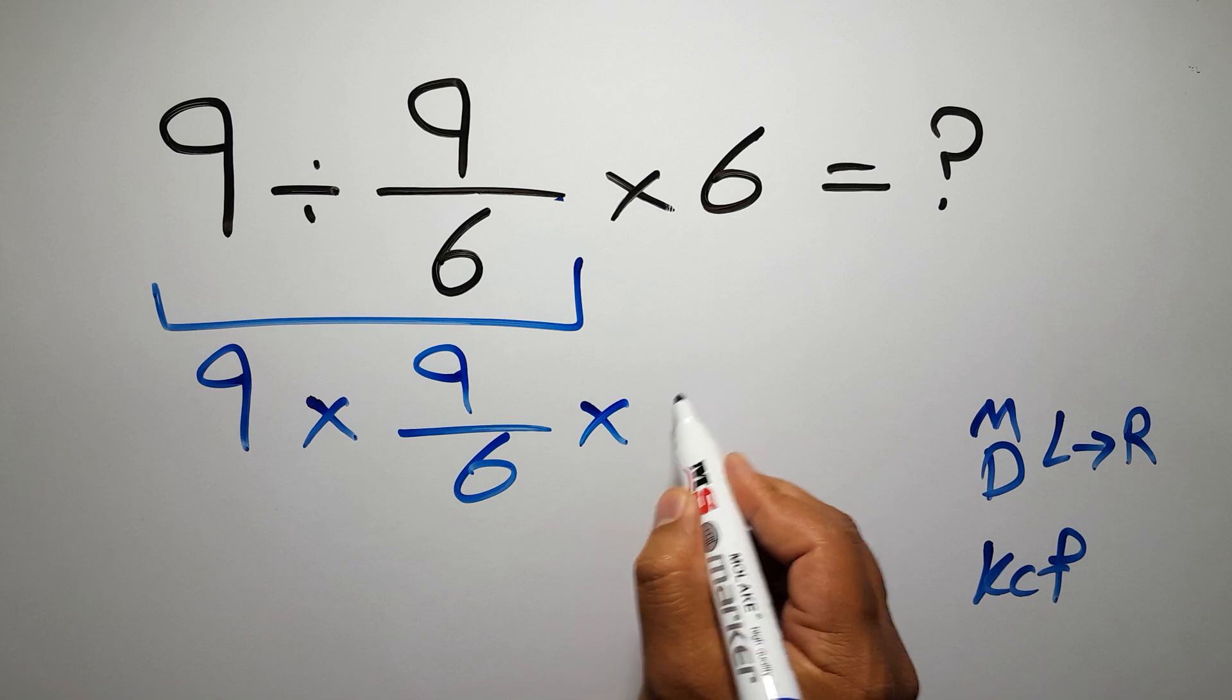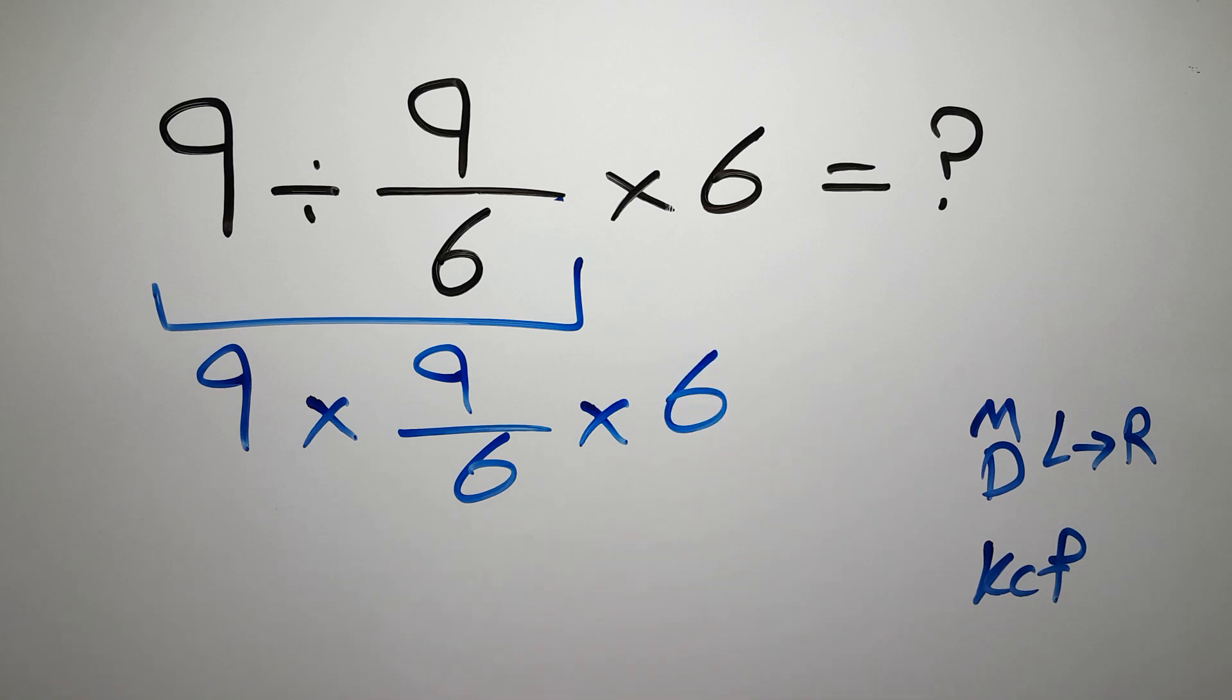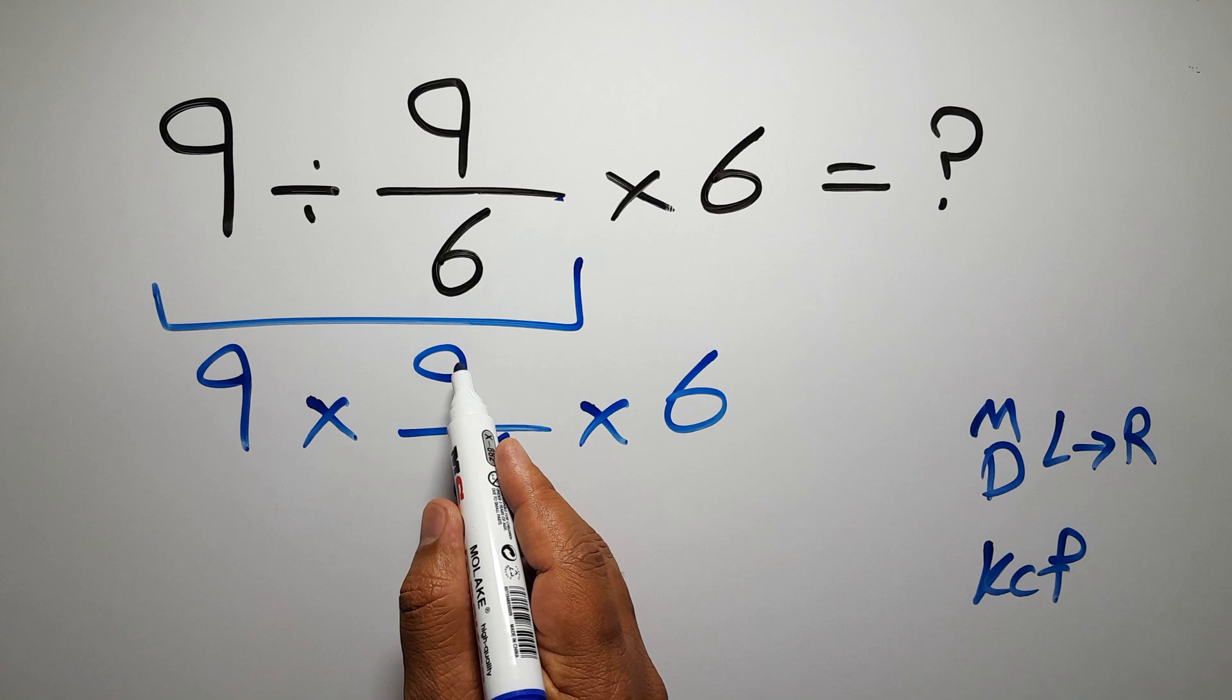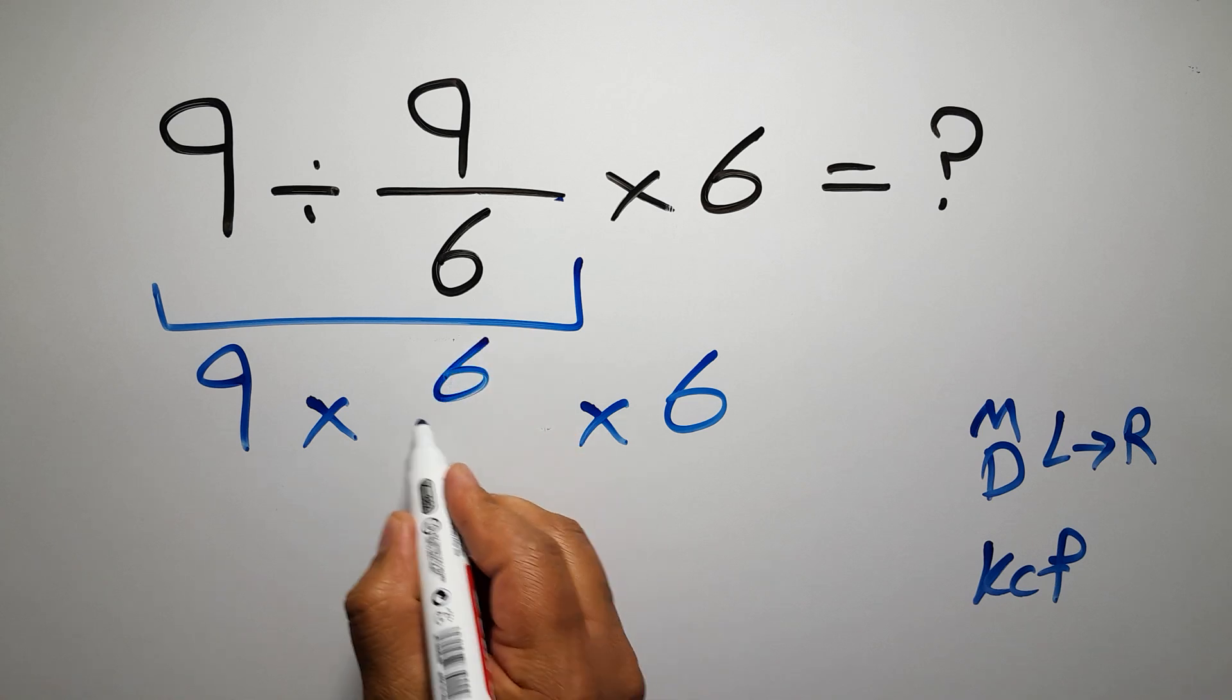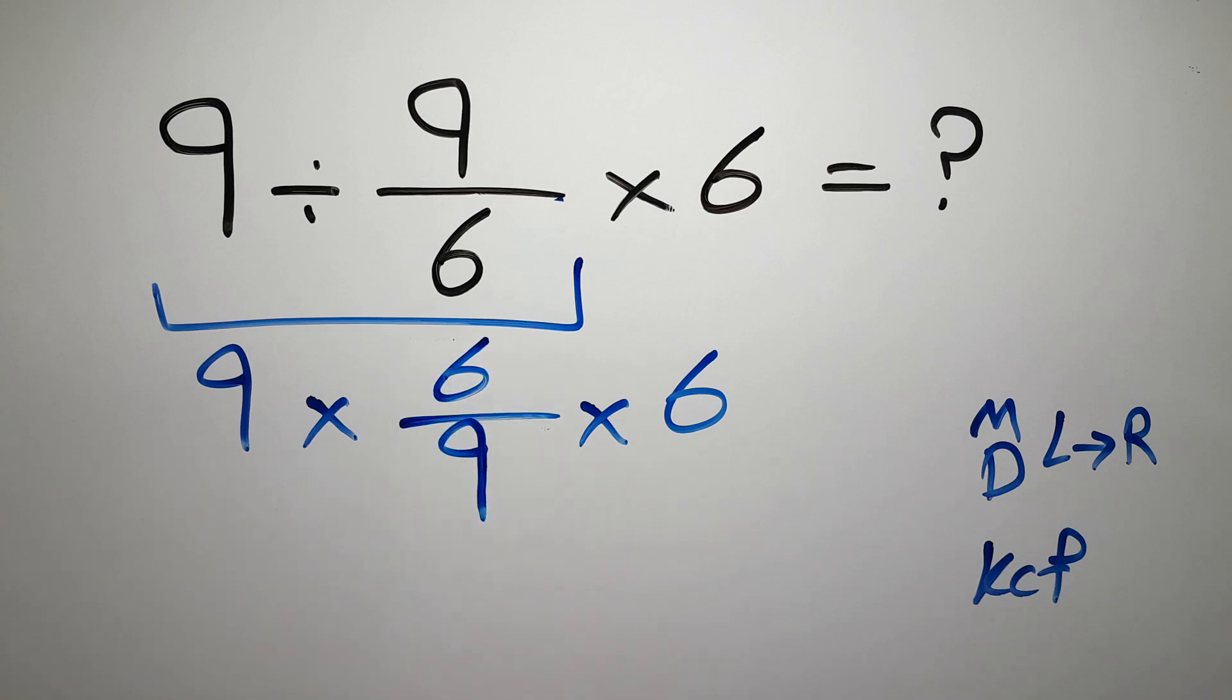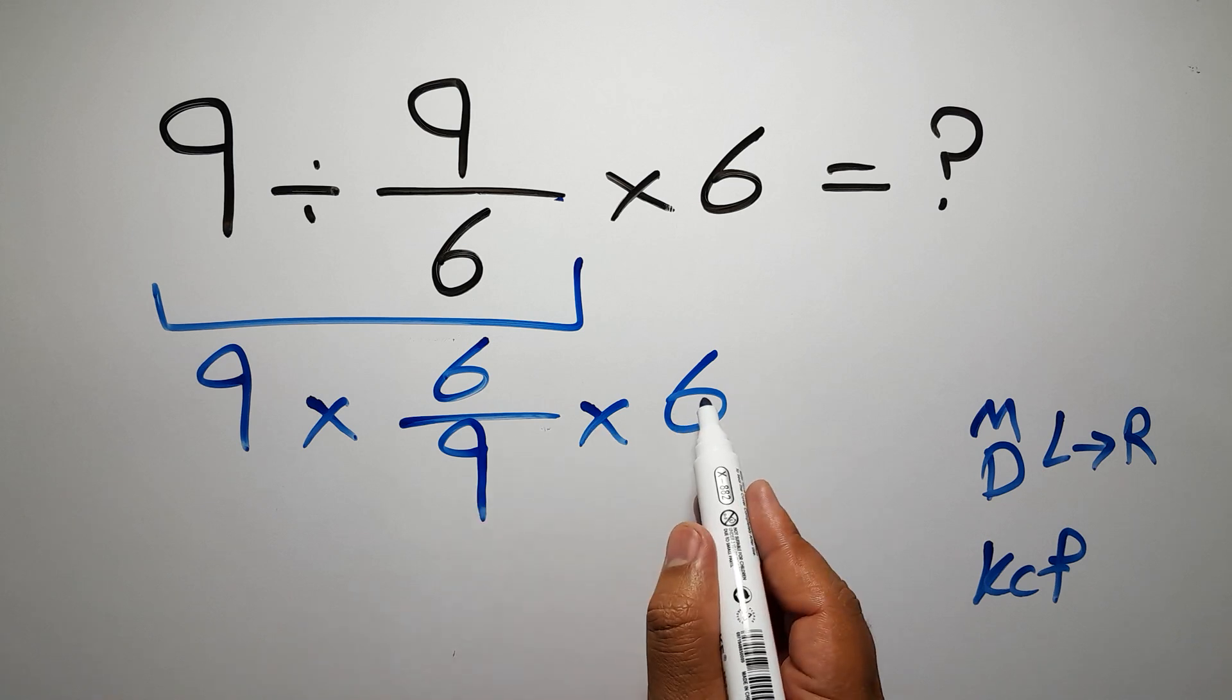And we have here times 6. Now we have 9 times... excuse me, we have here 6 over 9. So we have 9 times 6 over 9 times 6.